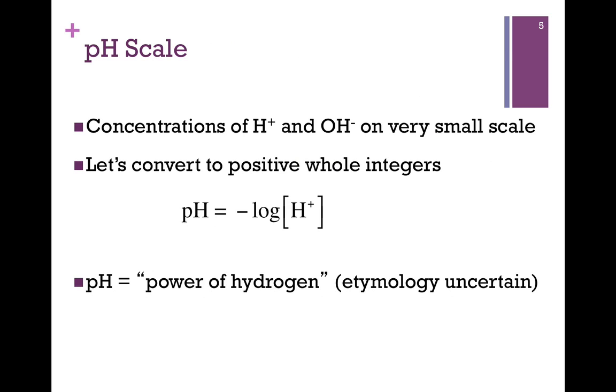As we saw in the previous slide, the concentrations of these ionized forms of water are on a very small scale. So for convenience, let's convert those to positive whole integers. So to do that, we're going to take the negative log of the concentration of H+, that's our pH value. The etymology of that designation of pH is a little uncertain, but for our purposes, we're going to refer to that as the power of hydrogen.